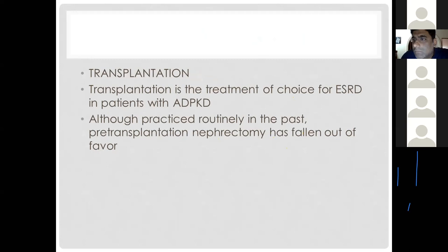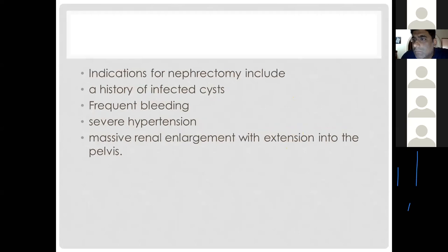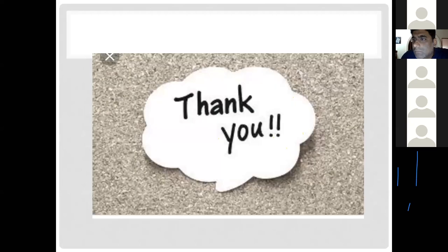Pre-transplant nephrectomy was previously required due to large kidney size, but is now discouraged because the existing kidneys still provide some GFR and are left in vivo if not causing symptoms. Indications for nephrectomy include recurrent cyst infections, frequent hematuria, uncontrolled blood pressure, and massive renal enlargement causing compression of surrounding structures with resulting symptoms.